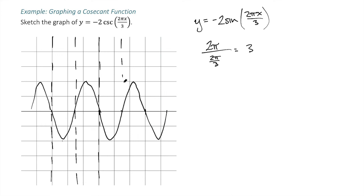And then we can draw our corresponding cosecant function by taking our peak and flipping it around. And so we're going to go beyond.